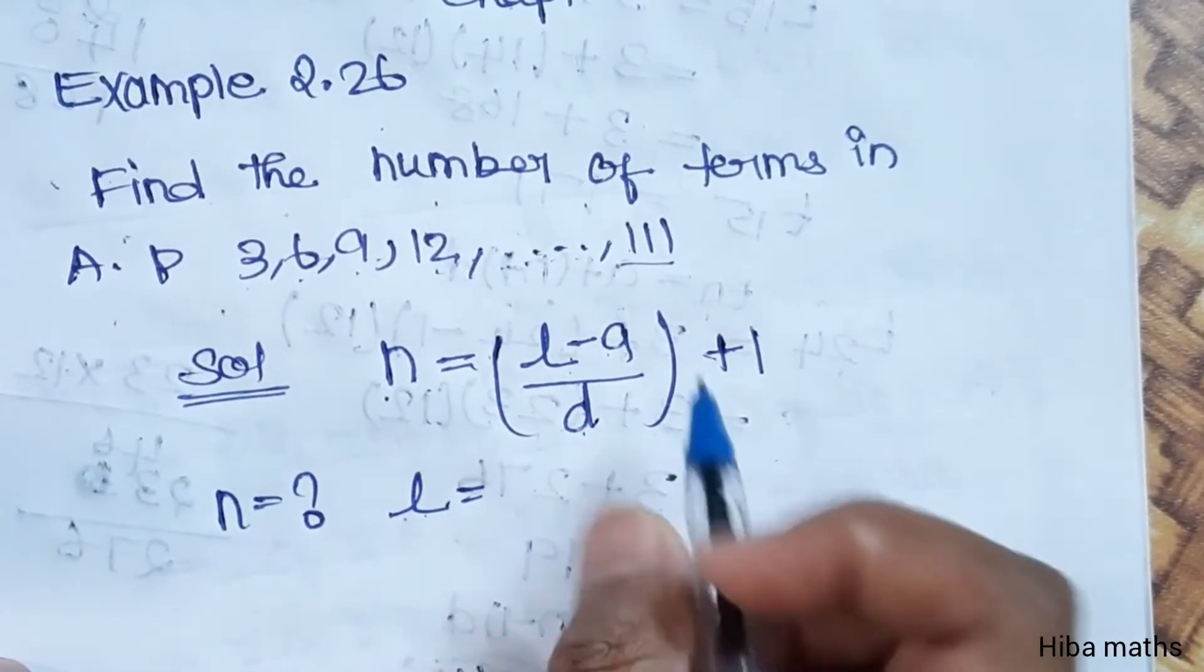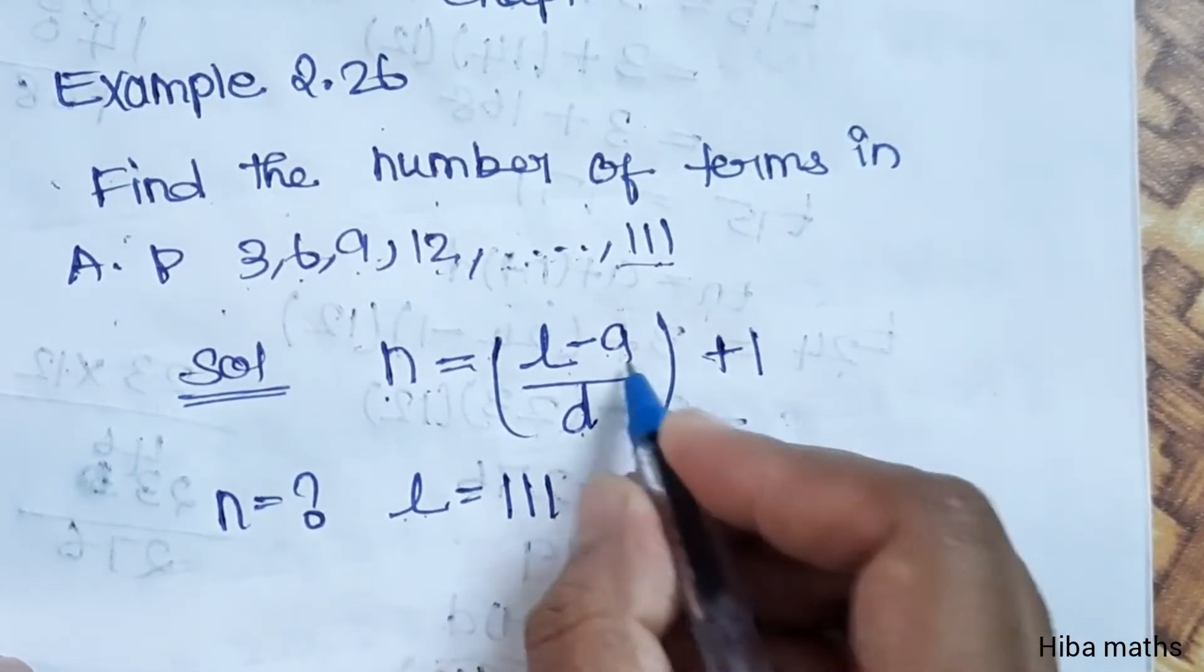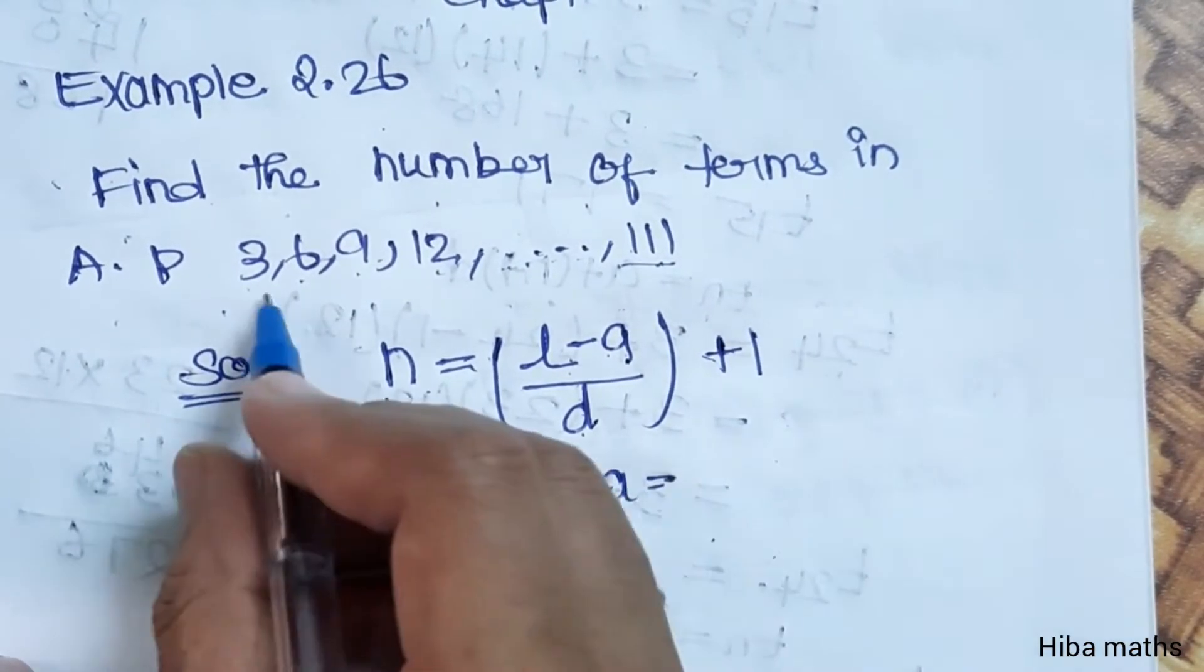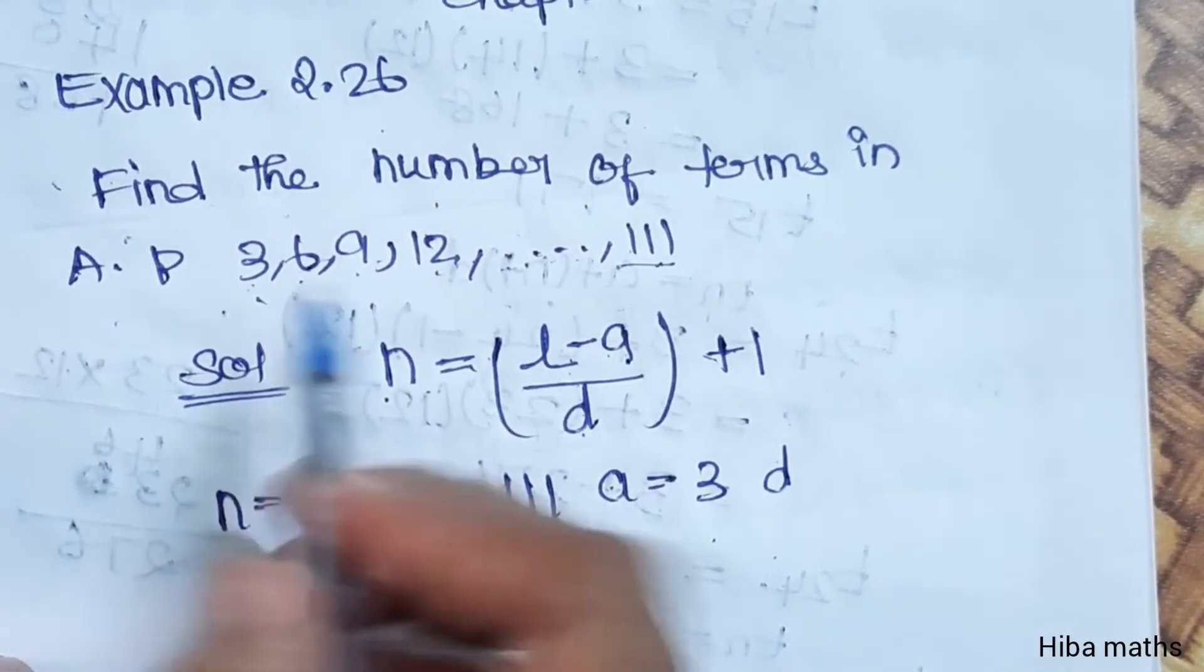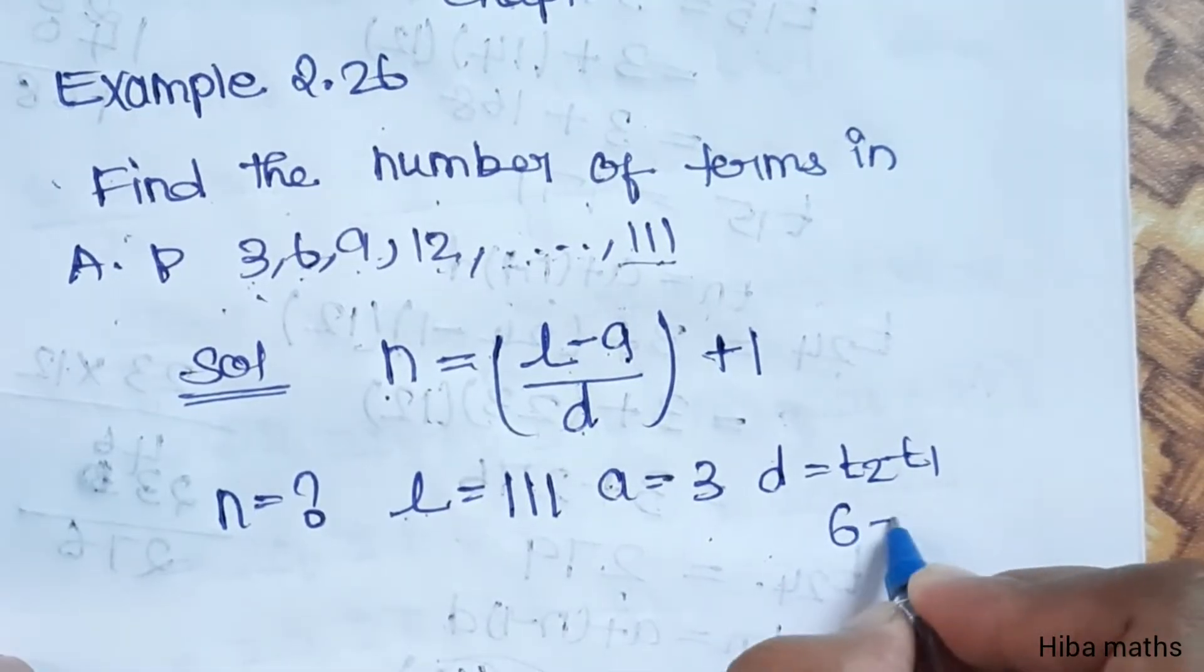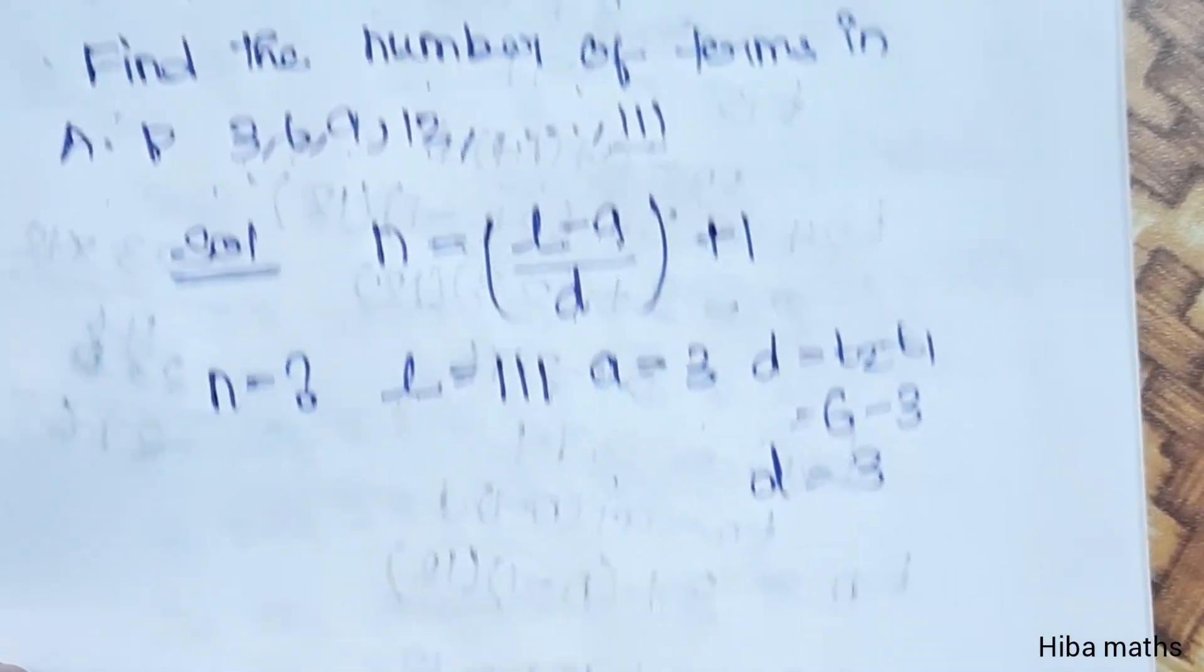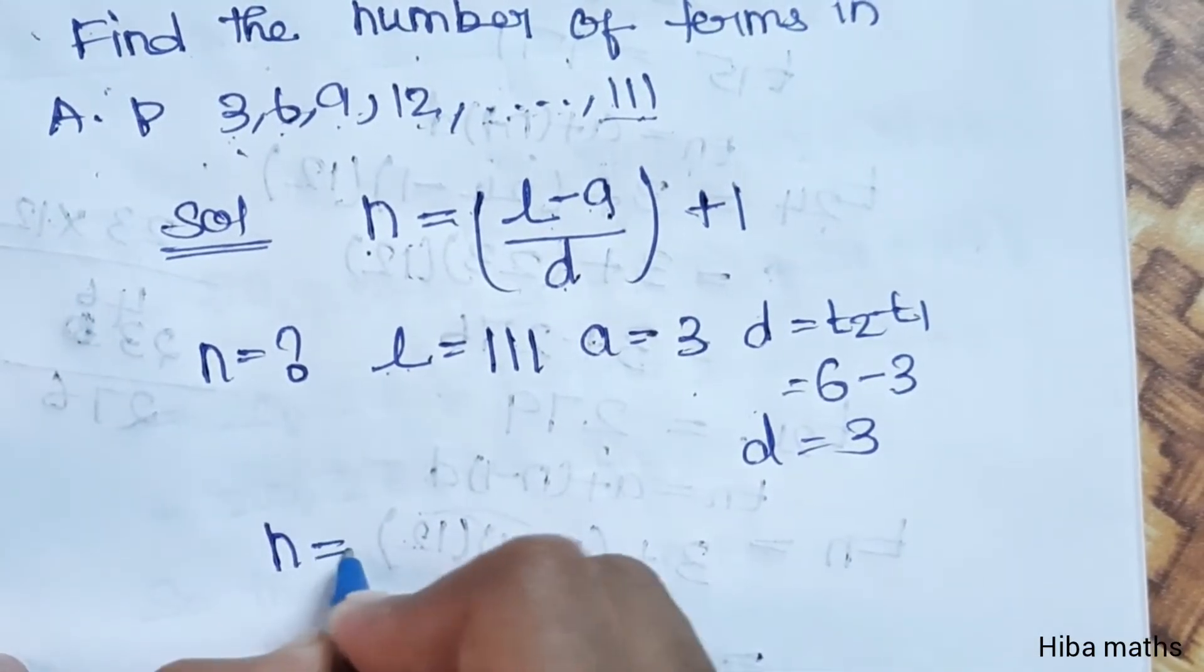L is the last term. A is the first term. D is T2 minus T1. Here, T2 is 6, T1 is 3, that equals 3. D value is 3. Now we substitute into the formula.